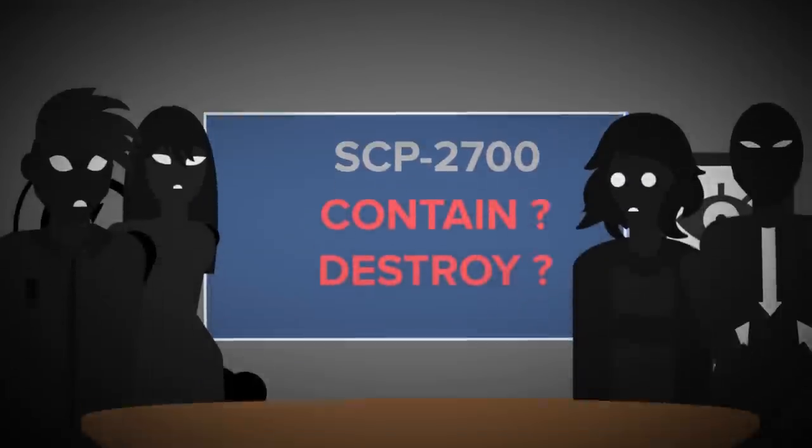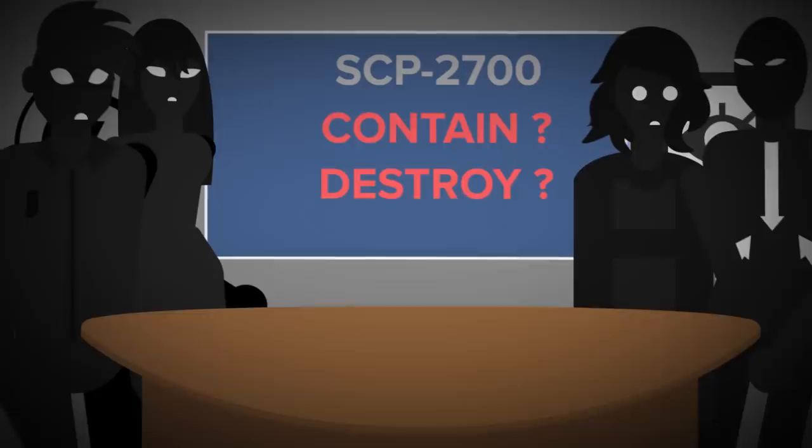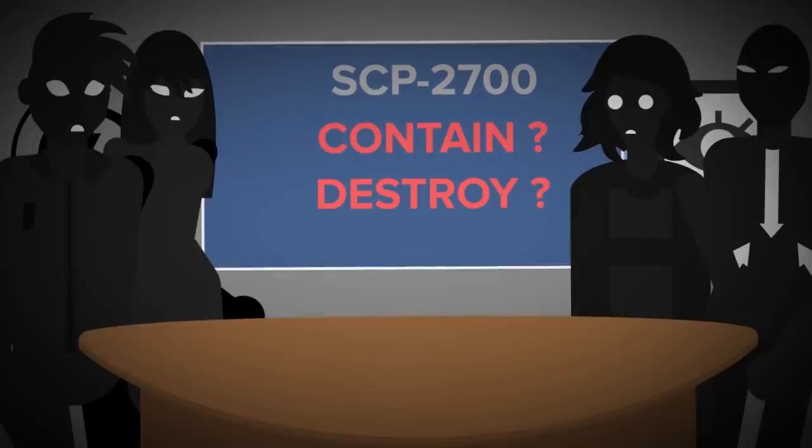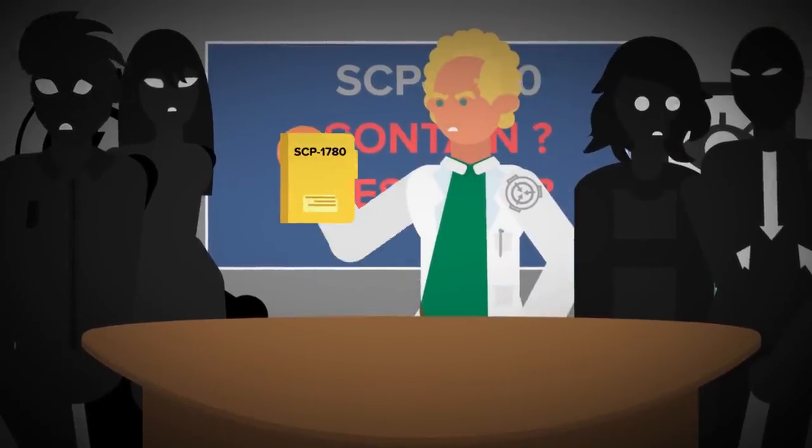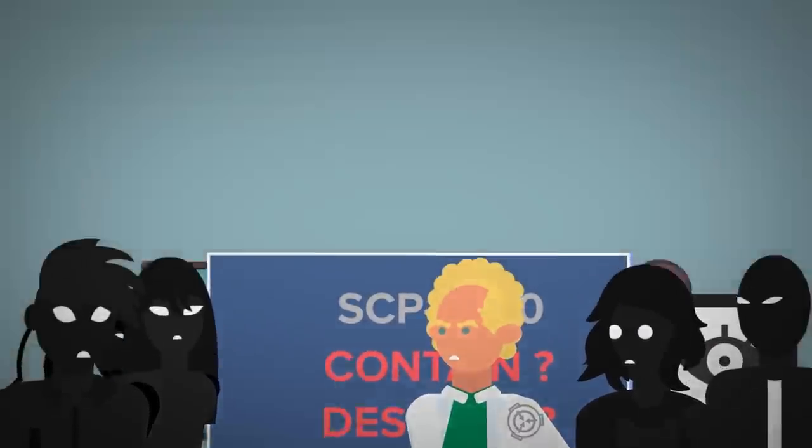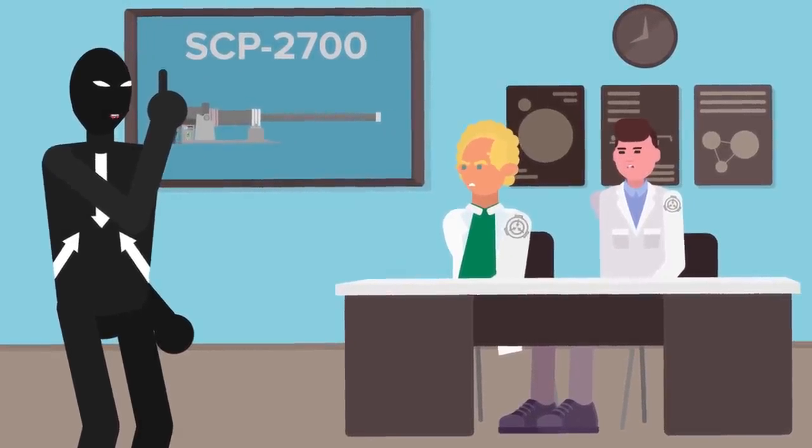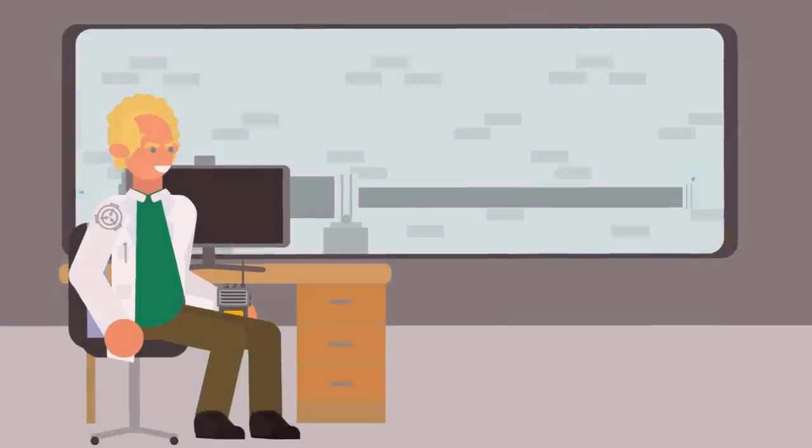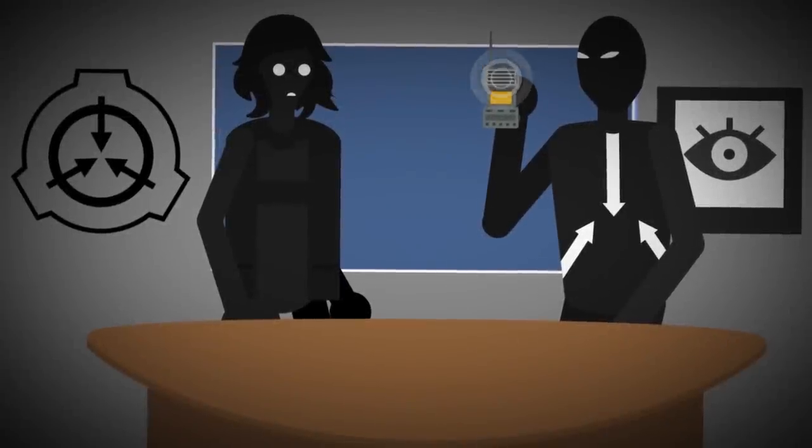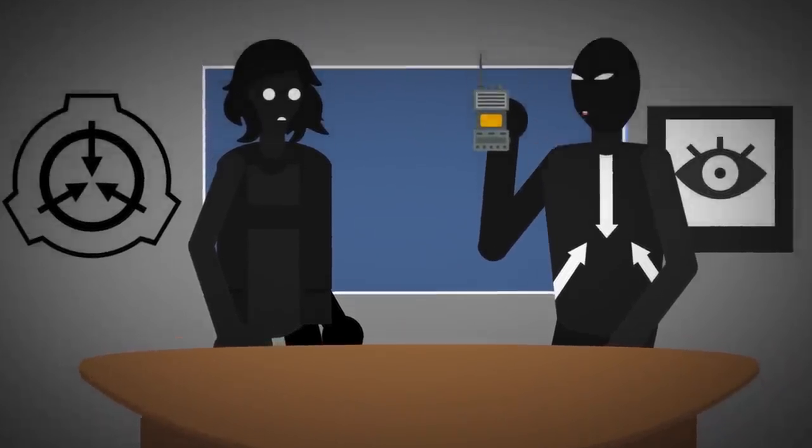The only hope the SCP Foundation has of preventing this destruction is to destroy or contain SCP-2700 forces. The O5 Council are still searching for a suitable candidate should the worst come to pass. For now, personnel have been instructed to avoid tampering with the Teleforce in any way, shape, or form. Should SCP-2700-Omega show any change in its behavior, then let's just hope that the Overseer Council is able to produce an anomaly capable of neutralizing it.